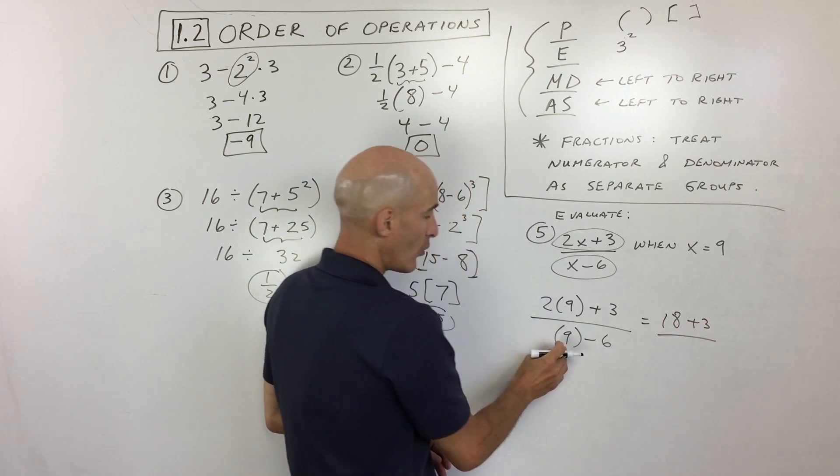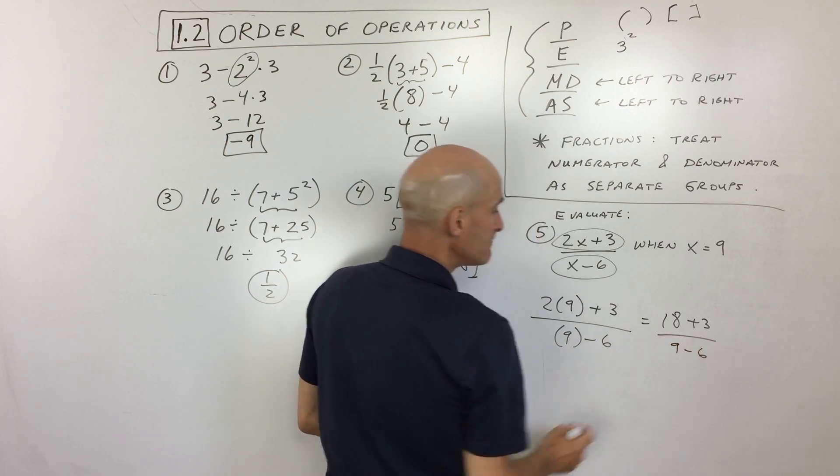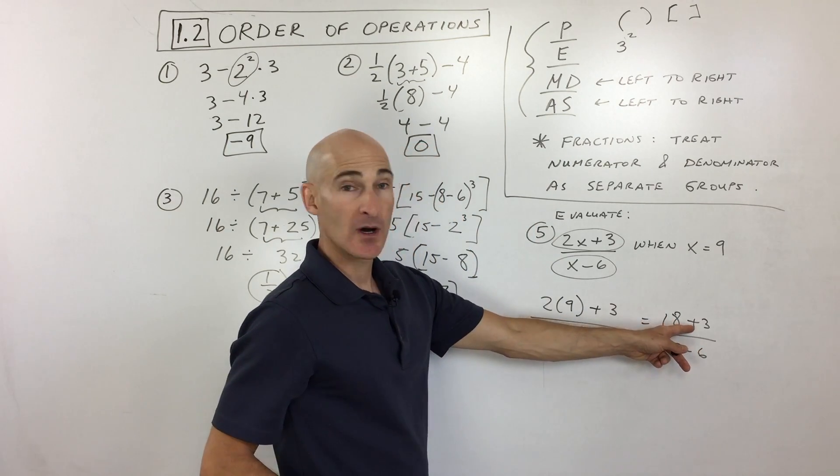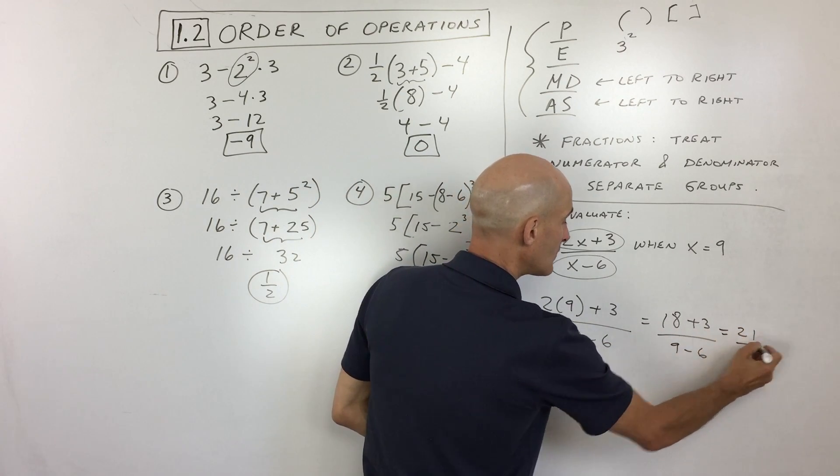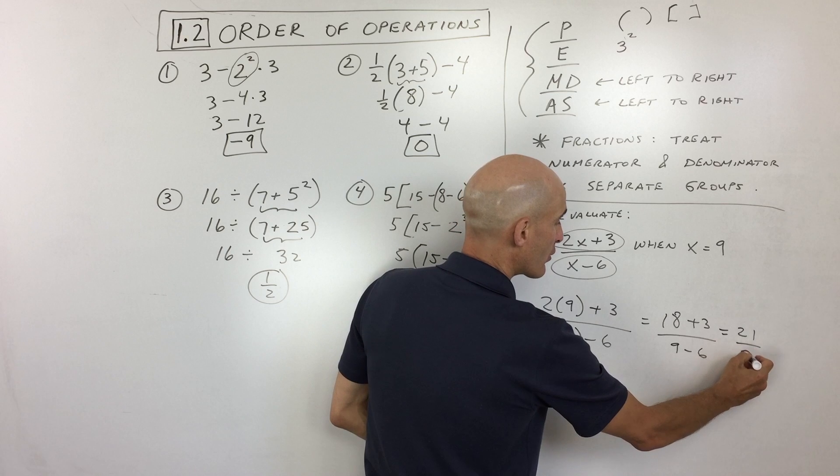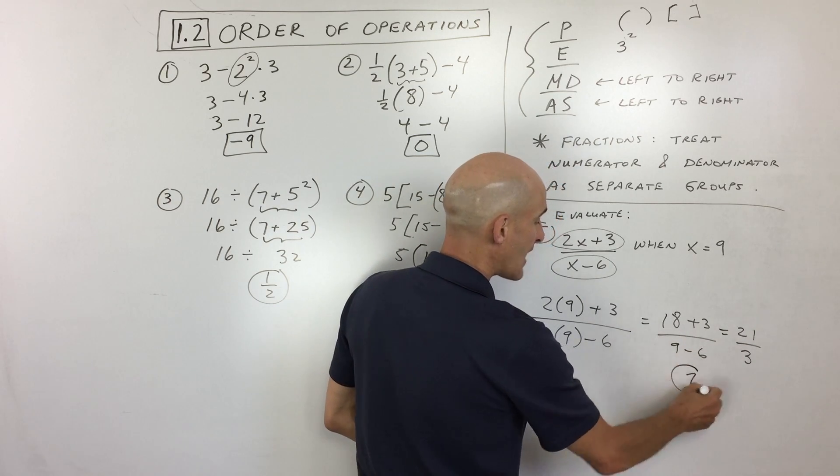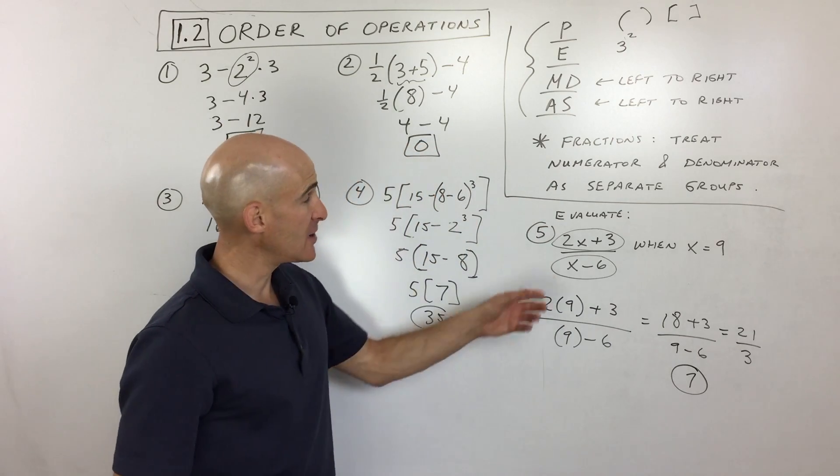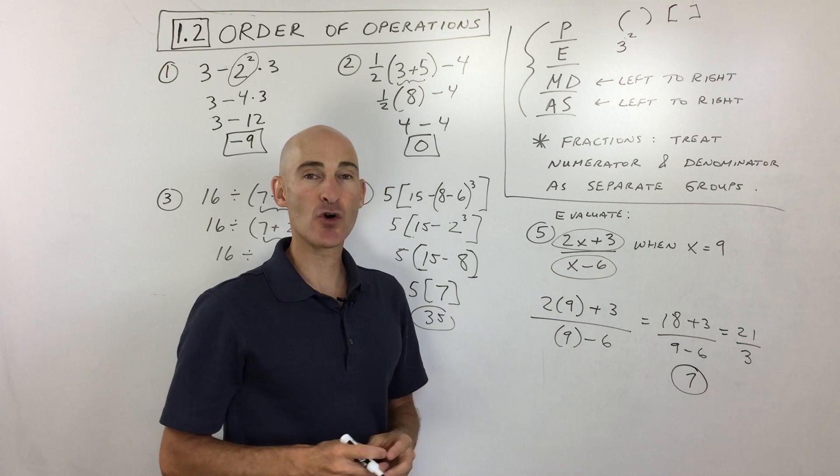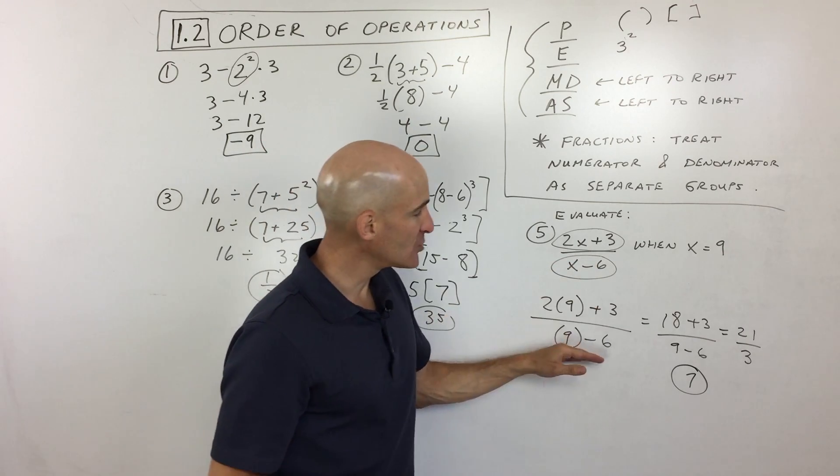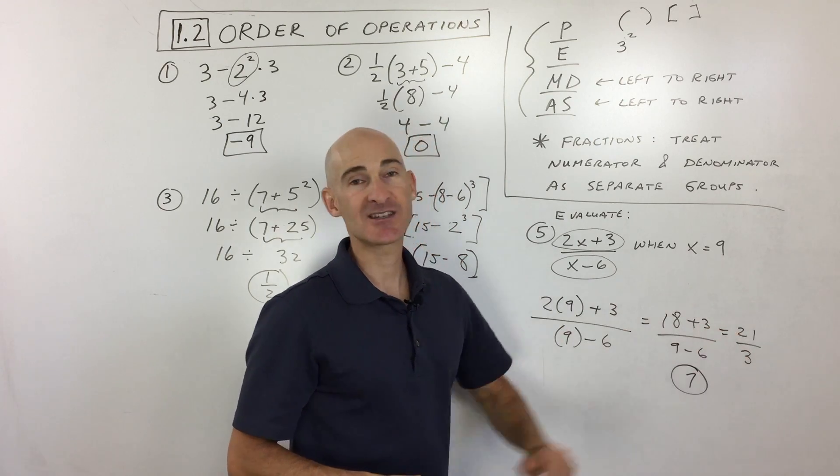Over here, we have 9-6. Down to addition: 18+3=21. 9-6=3. Lastly, 21÷3=7, and we've got it. What I did is treat the numerator as its own problem and the denominator as its own problem. I simplified them individually, and at the very end we divided, but we saved that for the last step.